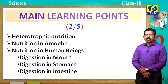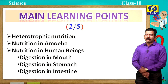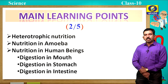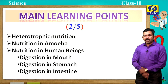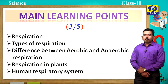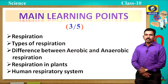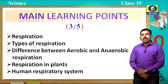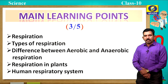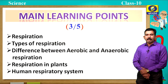In the second session we are going to discuss mainly heterotrophic nutrition, nutrition in amoeba, nutrition in human beings — especially digestion in mouth, digestion in stomach, and digestion in intestine. The main learning points we are going to study in the third session are respiration, types of respiration, the difference between aerobic and anaerobic respiration, respiration in plants, and also human respiratory system.